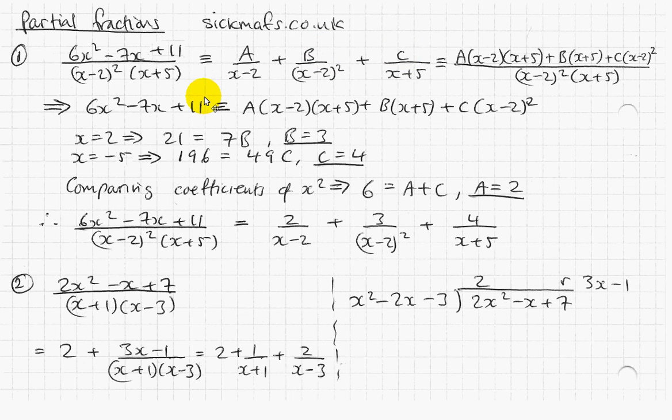The rough idea is that for every factor on the bottom, usually these bracket things, I create an extra fraction. So this is a factor x plus 5 which makes this fraction which has got denominator x plus 5. This one actually creates two fractions because it's got a squared. And how it works is you create one linear one, x minus 2, and one squared one like this is x minus 2 squared. And that's that really.